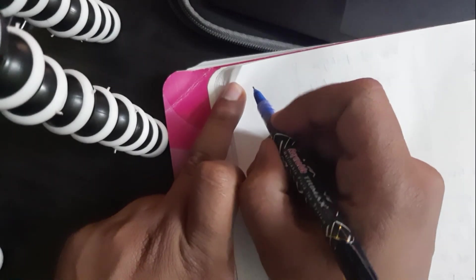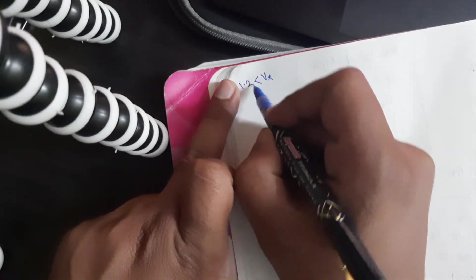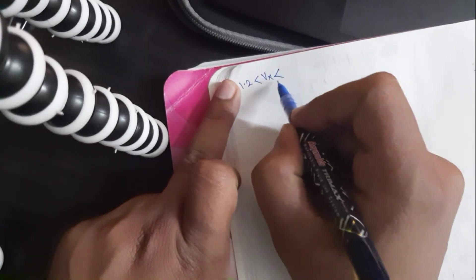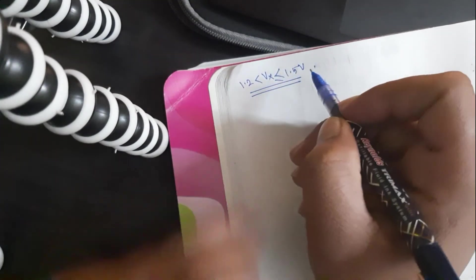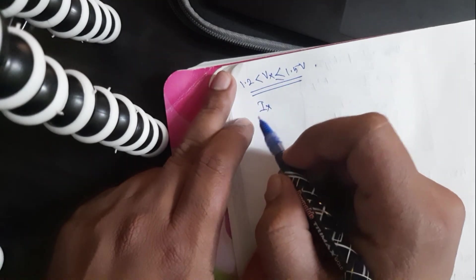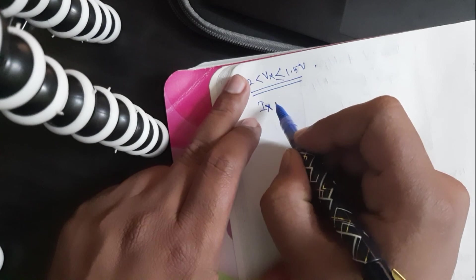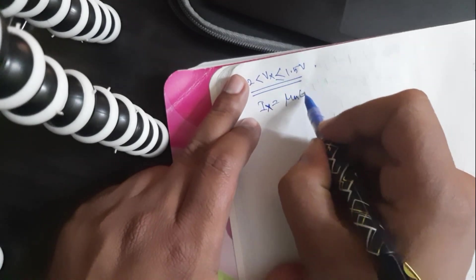Now, only the last part remains, which is what happens when Vx goes beyond 1.2 and there's a limit, which is 1.5. So we know when Vx is between these two values, the transistor is in saturation. And what is the value? What is the current formula in saturation?